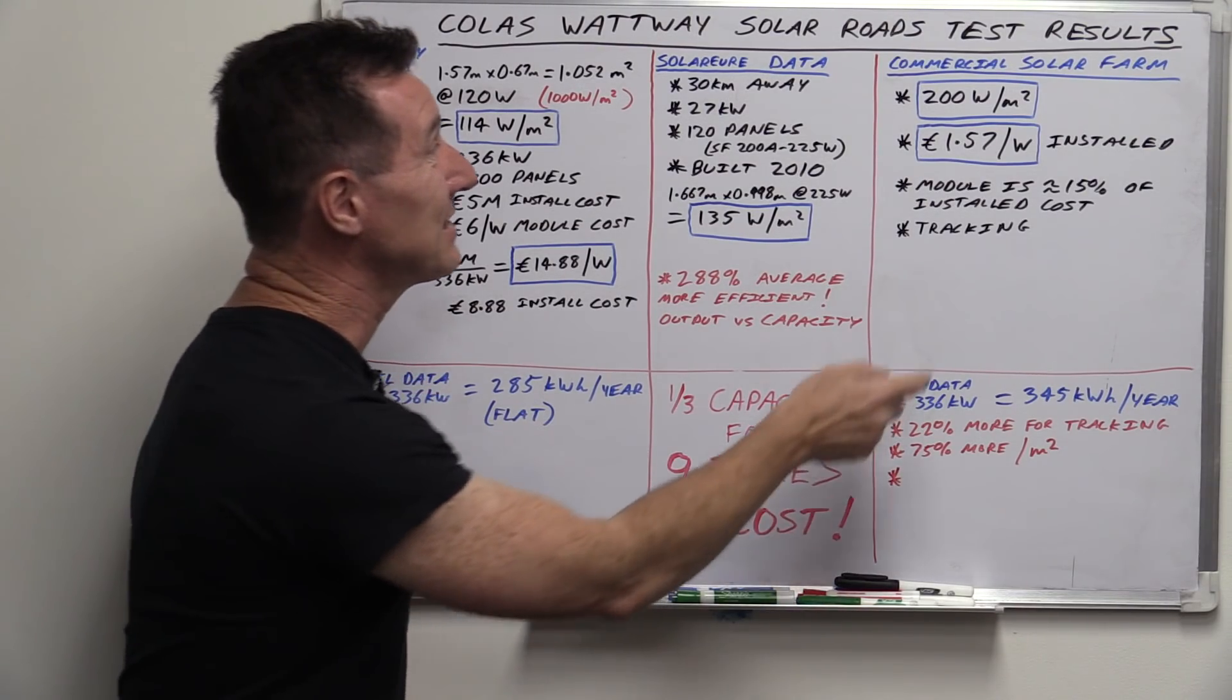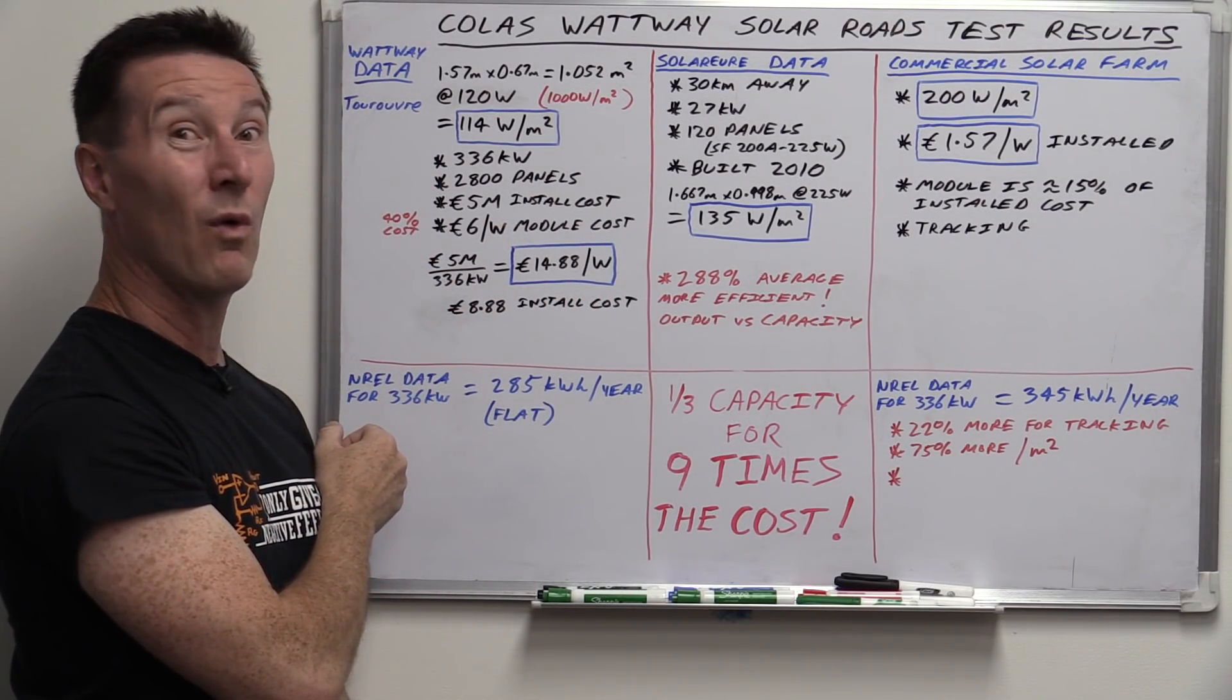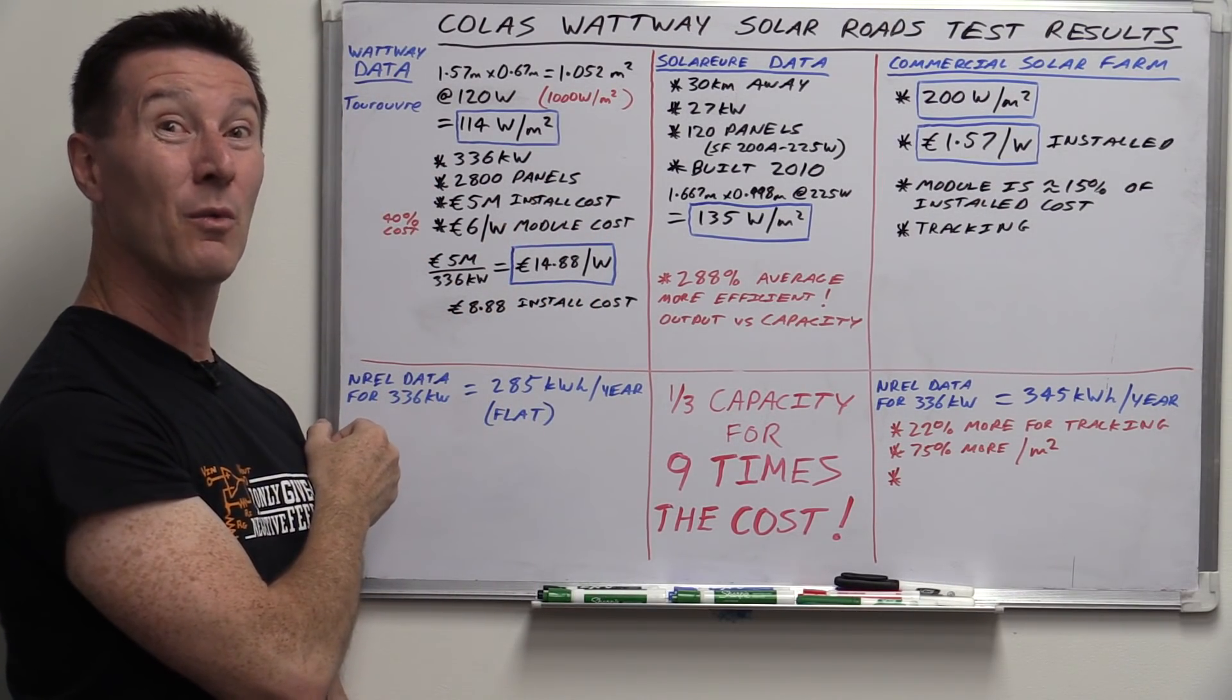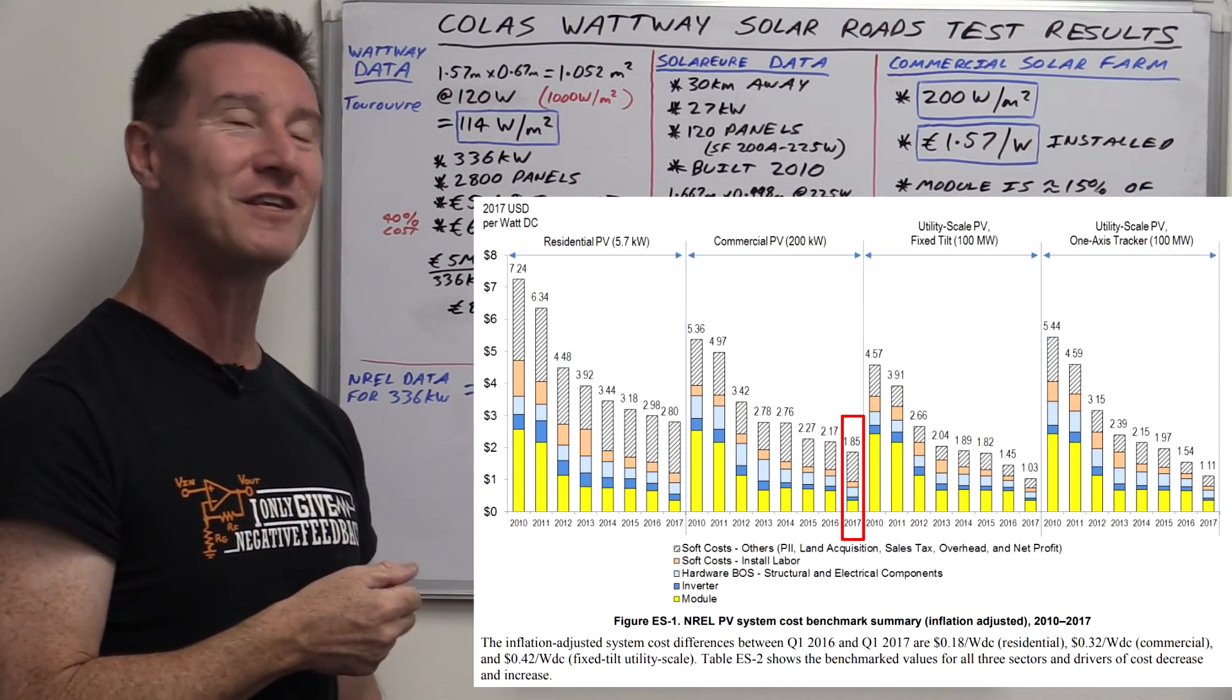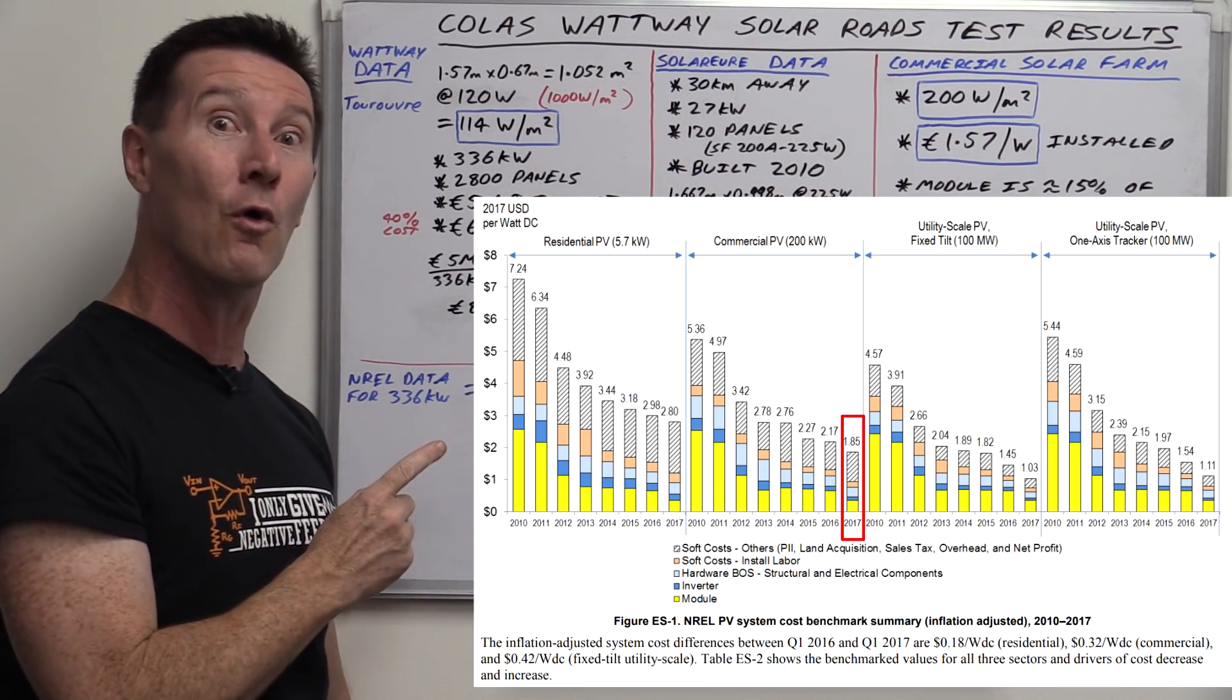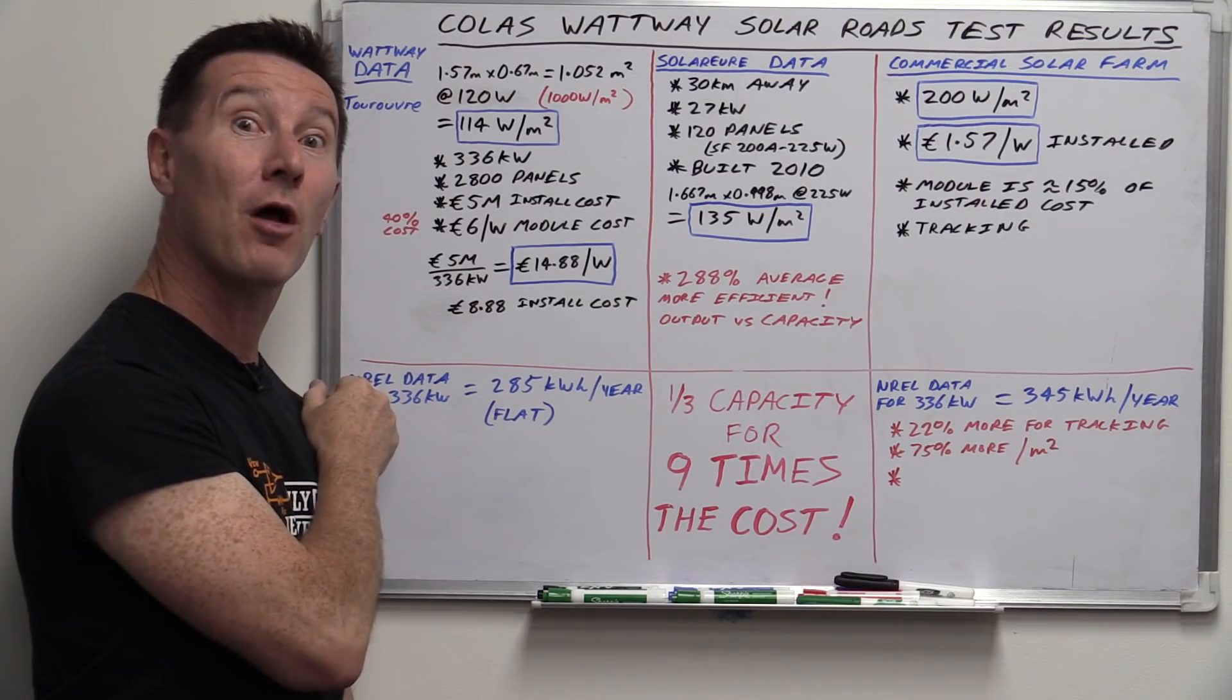Well, let's go over here to a commercial solar farm. Right off the bat, we're screwed. Commercial solar farms are about a dollar 57 euro per watt installed. Houston, we have a problem.